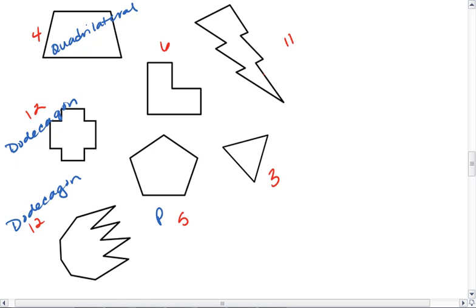My 5-sided figure is a pentagon. My 3-sided figure is a triangle. My 6-sided figure is a hexagon. And my lightning bolt is an 11-gon.